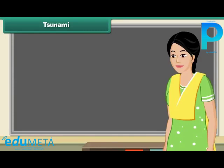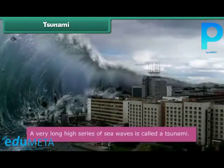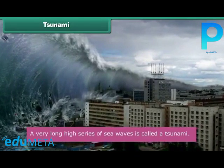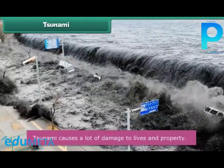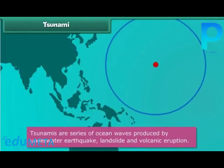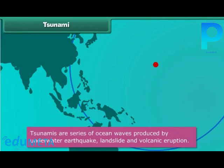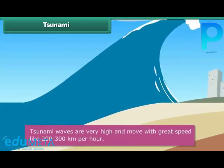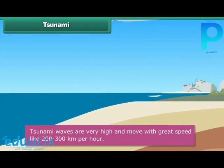Tsunami. A very long, high series of sea waves is called a tsunami. It causes a lot of damage to people and property near the sea. Tsunamis are series of ocean waves produced by underwater earthquakes, landslides, and volcanic eruptions. These waves are 30 meters high and 200 kilometers long, and travel at a speed of 200 to 300 kilometers per hour.